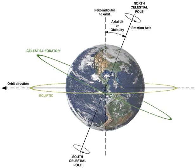Earth's axis remains tilted in the same direction with reference to the background stars throughout a year, regardless of where it is in its orbit. This means that one pole, and the associated hemisphere of Earth, will be directed away from the Sun at one side of the orbit, and half an orbit later, half a year later, this pole will be directed towards the Sun. This is the cause of Earth's seasons.